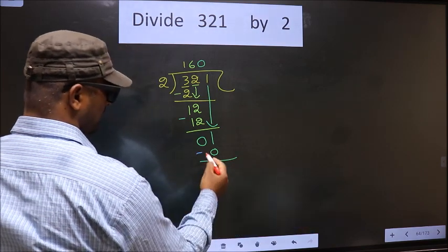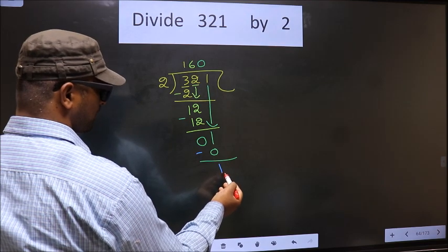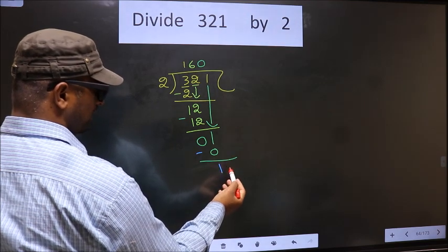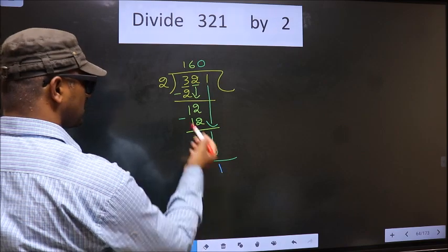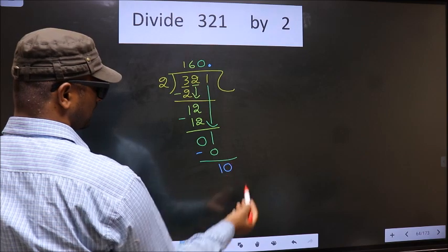Now you subtract. 1 minus 0 is 1. Now we have 1 here. We did not bring any number down, just 1. And 1 is smaller than 2. So now we can put a dot and take 0 here.